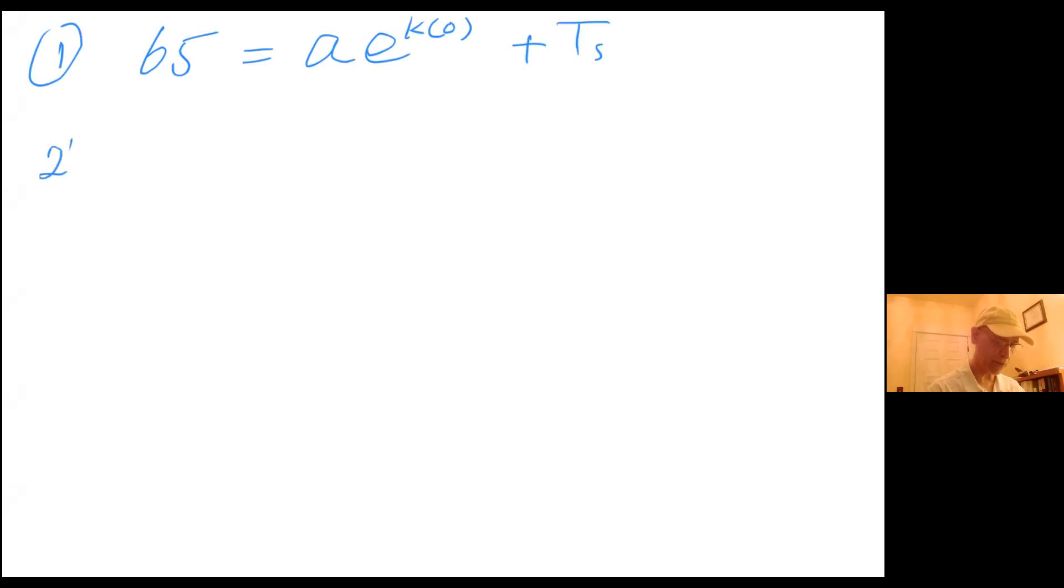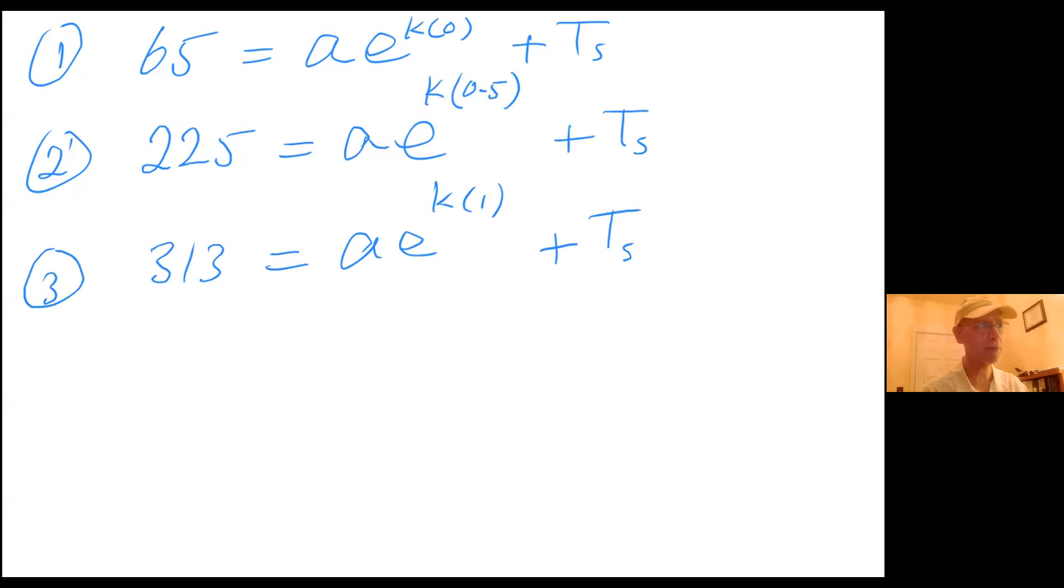For the second one, second equation I can claim that 225 equals sum A times e^(0.5k) plus T sub s. And for the third one I can claim that 313 equals A times e^k plus T sub s. These numbers are directly coming from the given problem.